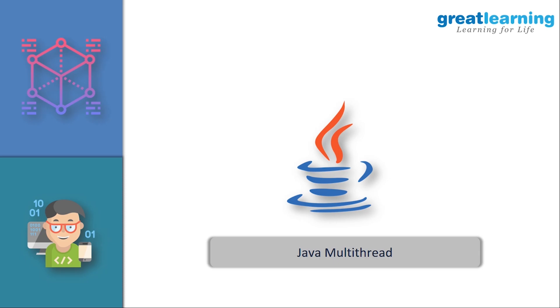Let's see what we have in today's agenda. We have the history of Java and how Java came into the picture. Then we'll see how to install Java and use an IDE like Eclipse. We'll cover variables, data types, operators, flow control statements, loops, multitasking, threads, and multithreading in Java — including the difference between multitasking and multithreading, and the functions available in multithreading.